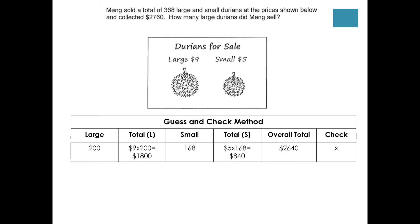In the guess and check method, students make a guess. It's stated that there are 368 large and small durians, so a student will guess, say, 200 large durians. The number of small durians would then be 368 minus 200, giving 168. Since each large durian is $9, $9 multiplied by 200 gives $1,800. And since each small durian is $5, 168 multiplied by $5 gives $840. The overall total — $1,800 plus $840 — gives $2,640.